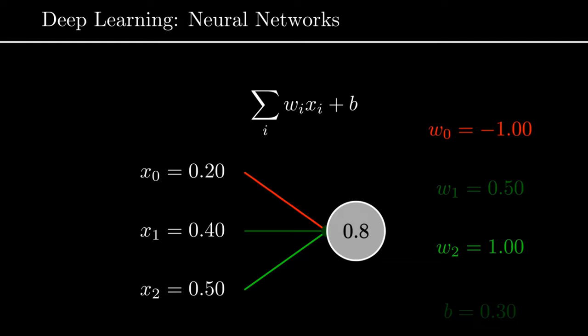In principle, if you connected lots of these neurons together you would still only ever get a linear model, because linear models injected into linear models are all linear — there's no non-linearity. What you do is apply an activation function, often called sigma, to the output of this whole sum, which injects some non-linearity. Applying this moves the value from 0.8 to 0.66, and if you then feed this result into another neuron with its own activation function, these non-linear activation functions mean that the input and the output can be made arbitrarily non-linear.